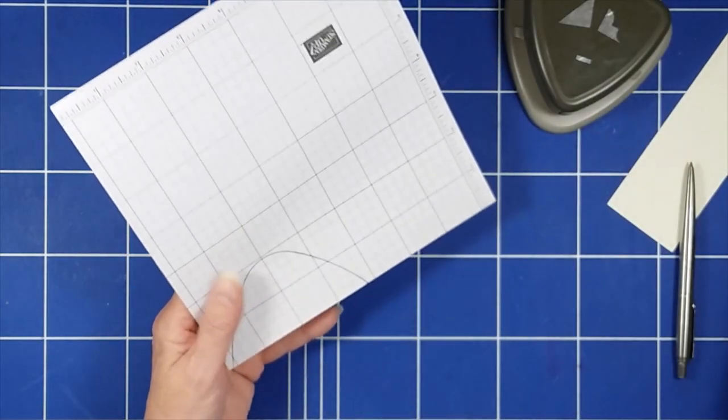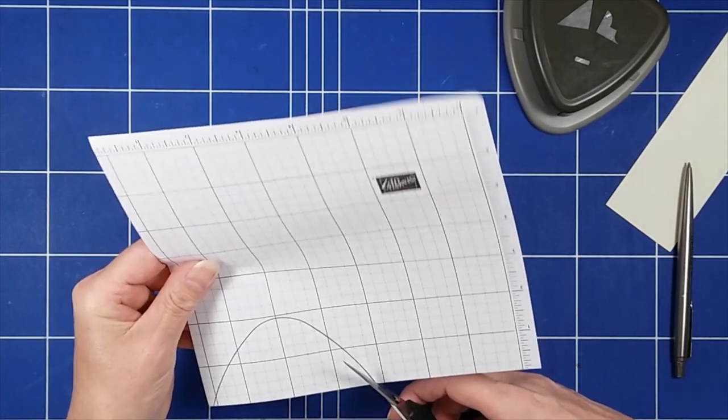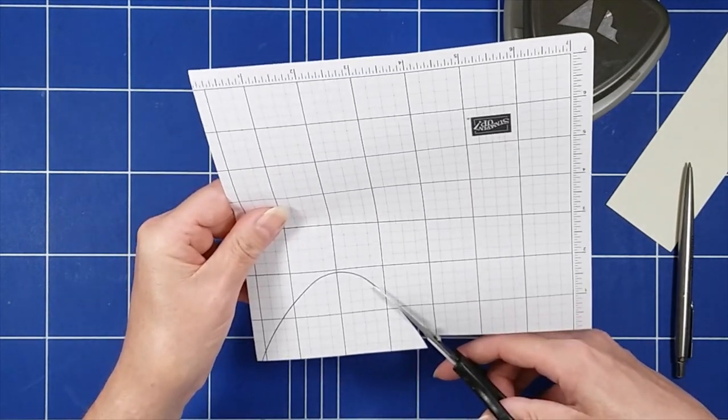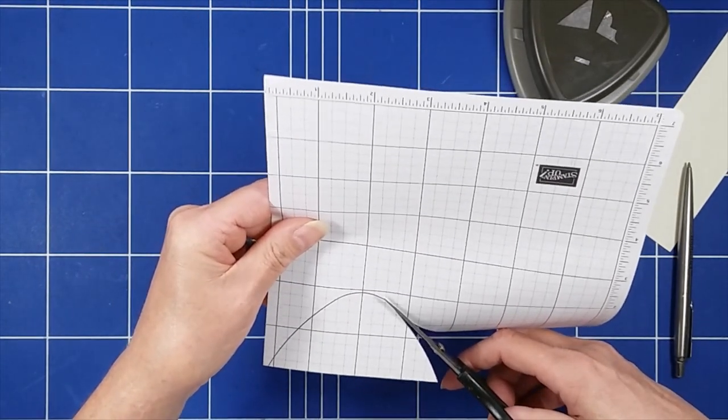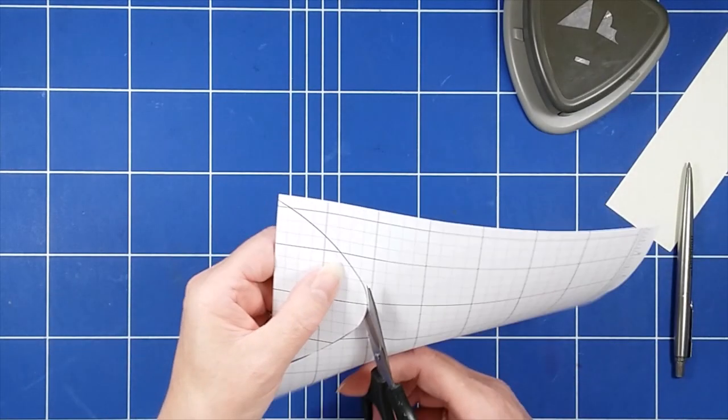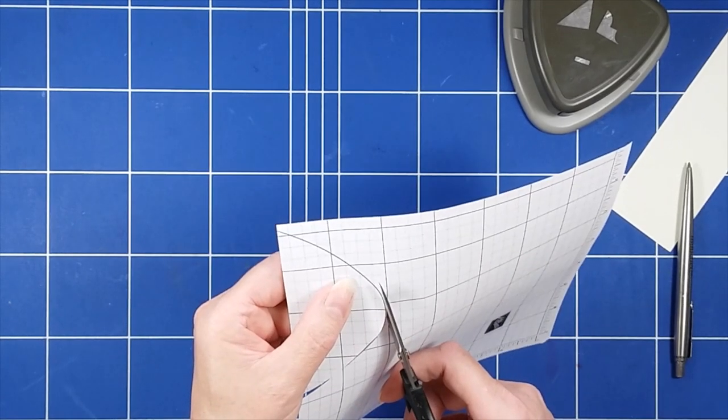Now all I have to do is cut this out, so I'll get my paper snips and I'm going to cut around that curve.